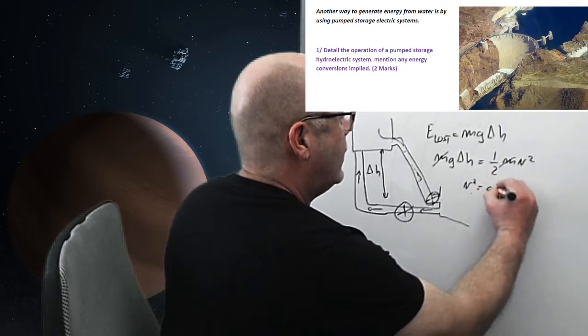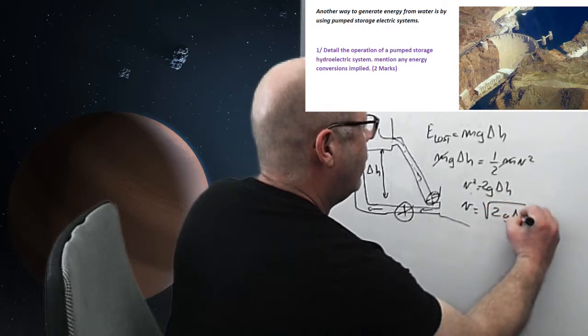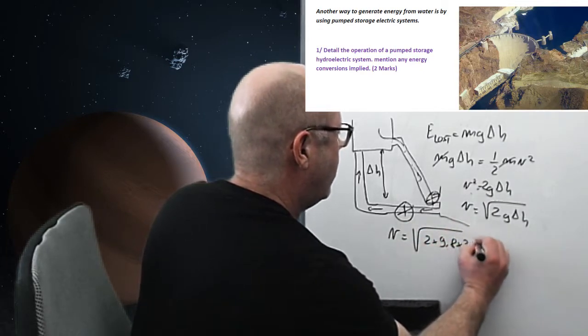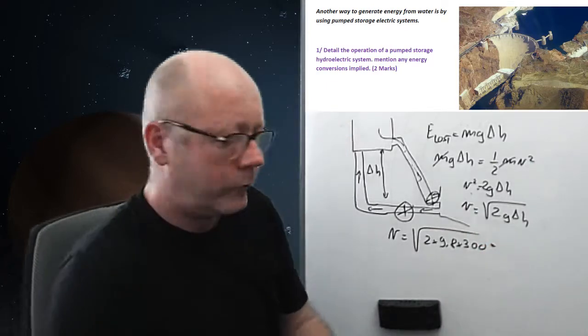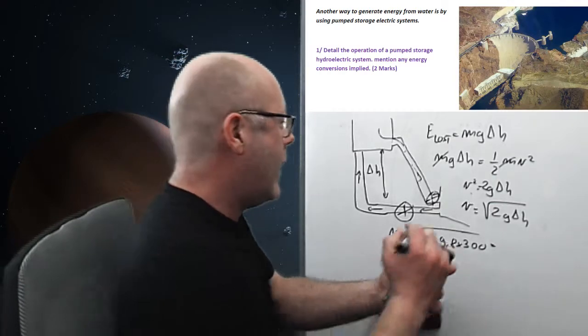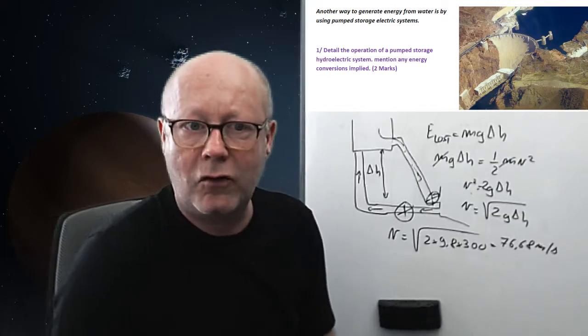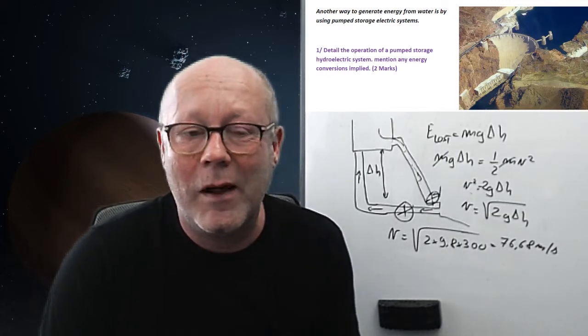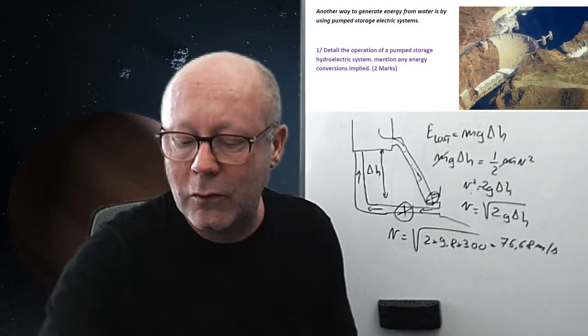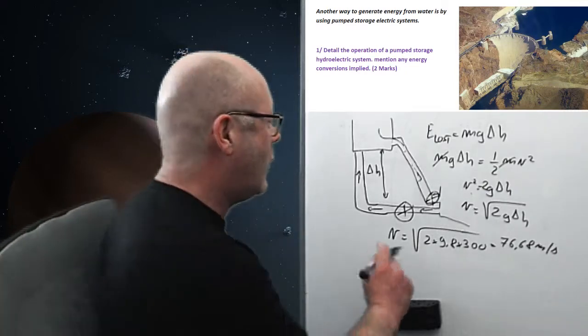So, you've got v squared equals 2 g delta H, or v equals square root of 2 g delta H. So, v equals square root of 2 by 9.8 by 300. And if I calculate this, 2 by 9.8 by 300 and I take the square root and I find 76.68 meters per second. Now, how many significant figures do I need? Well, it's not really clear because that's 300, right? I use 9.8, so that limits to two significant figures.